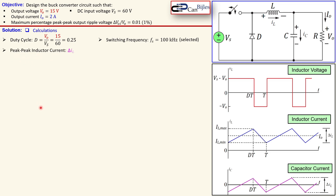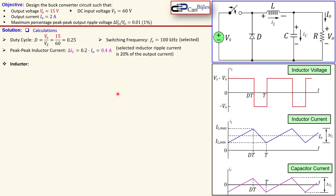The peak-to-peak inductor current, denoted delta_IL, is a value you need to select. In this case it is chosen as 20% of the output current, so 20% of 2 amps gives 0.4 amps. We therefore consider a 0.4 amp peak-to-peak inductor current. You could also choose 30% or 10%, depending on the requirements and how precise you want your converter.